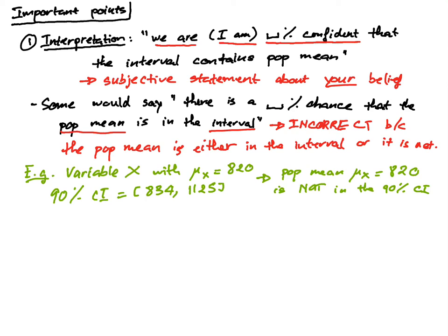So when you are asked to interpret the result, you would say that we are 90% confident that the population mean is in the interval. And in this case, you would be wrong. But that's okay, right? This is your personal opinion.